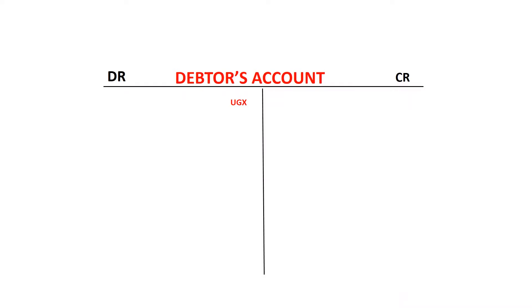A debtor in a business is somebody to whom you supplied goods and they are supposed to pay you later — that's a debtor. As far as double entry goes, if somebody owes the business money, that person is a debtor to the business, and in the business's books that person is always debited. Let's use a graphic illustration: we have a debtor's account on screen. This person came to the premises and got some goods from the business but promised to pay later. So this becomes debtors, and it means that you debit their account.